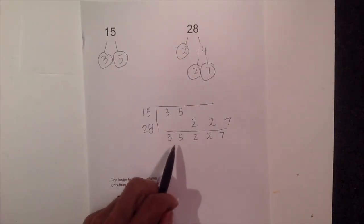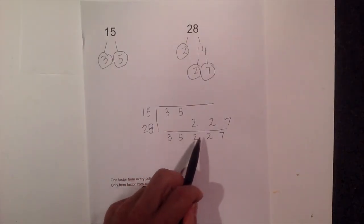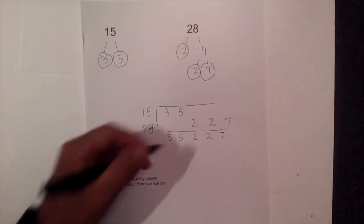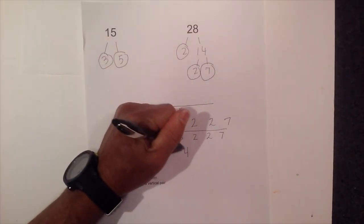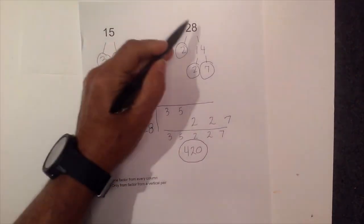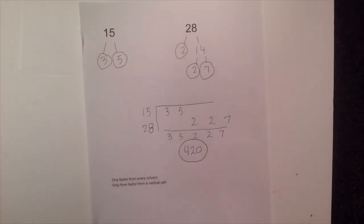And then 3 times 5 is 15. That is 30. That is 60. And 60 times 7 is, let's see if I can do that. And 60 times 7 is 420. So the LCM of 15 and 28 is 420.